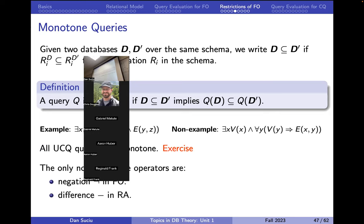We love monotone queries — they have many useful properties. Every conjunctive query and every union of conjunctive queries is monotone. The only non-monotone operators to avoid if we want queries to be monotone are negation and universal quantifiers in first-order logic — and difference in relational algebra.